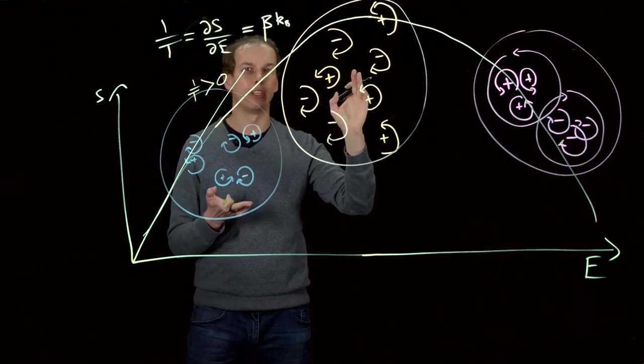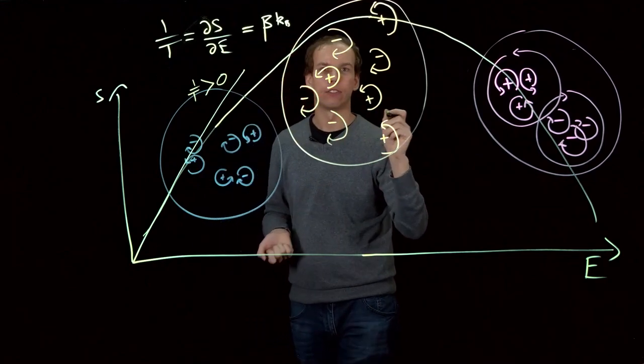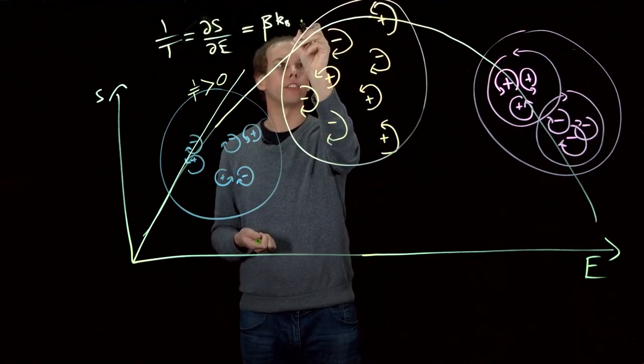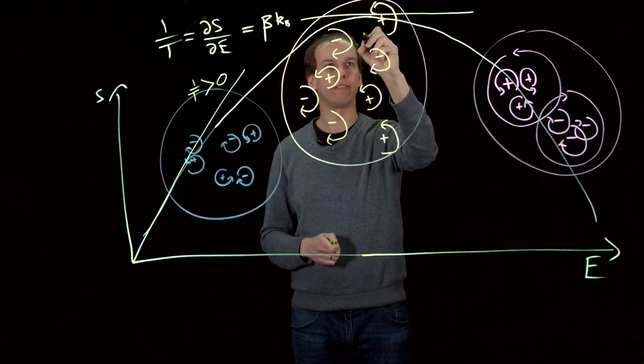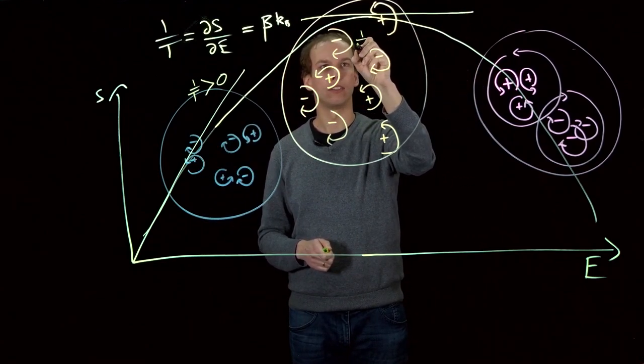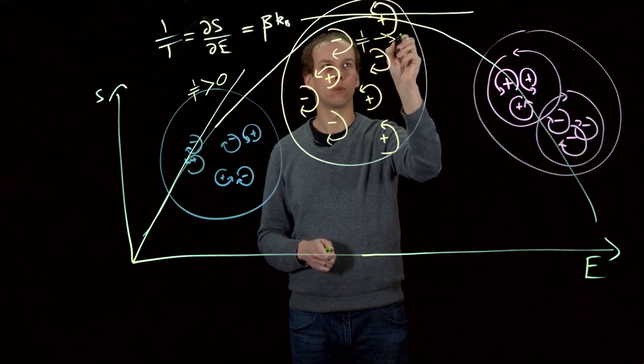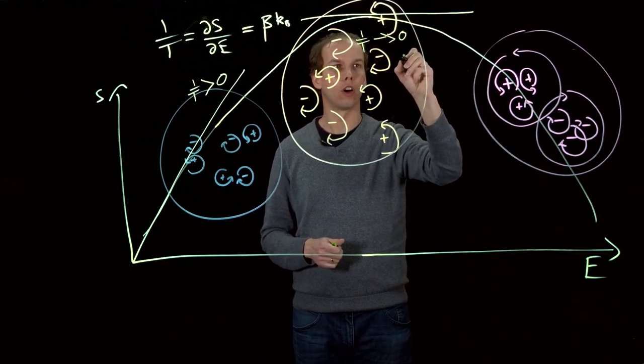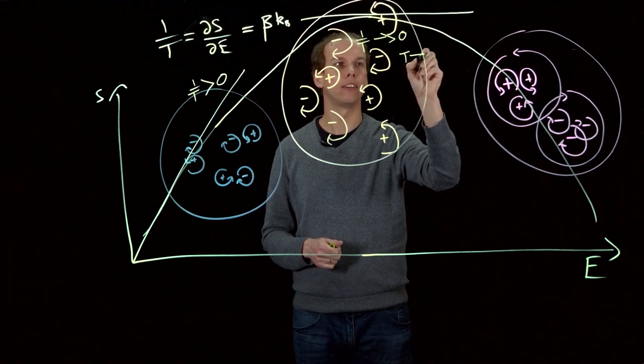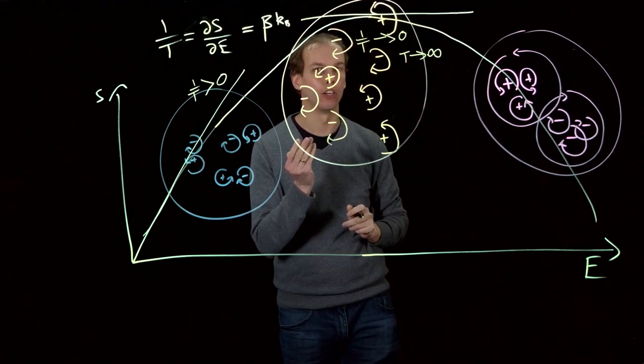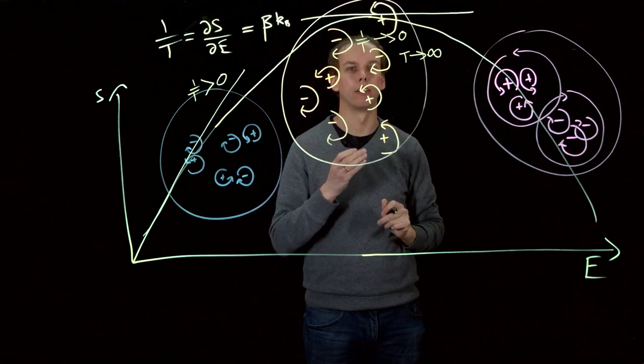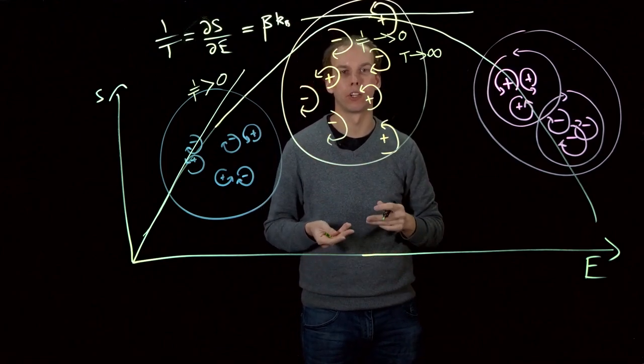As we move into these more random configurations, at some point, this gradient is going to go through zero. At this point, we have that 1/T goes towards zero, or equivalently T goes towards infinity. And so this most random configuration, we say that the temperature of the system goes towards infinity.